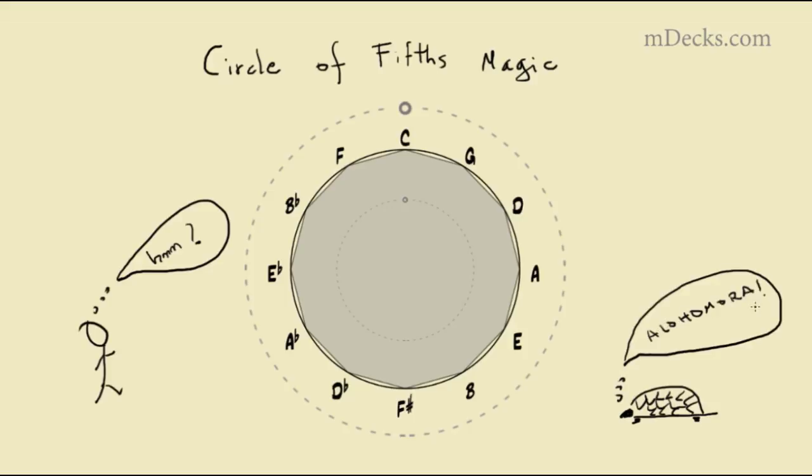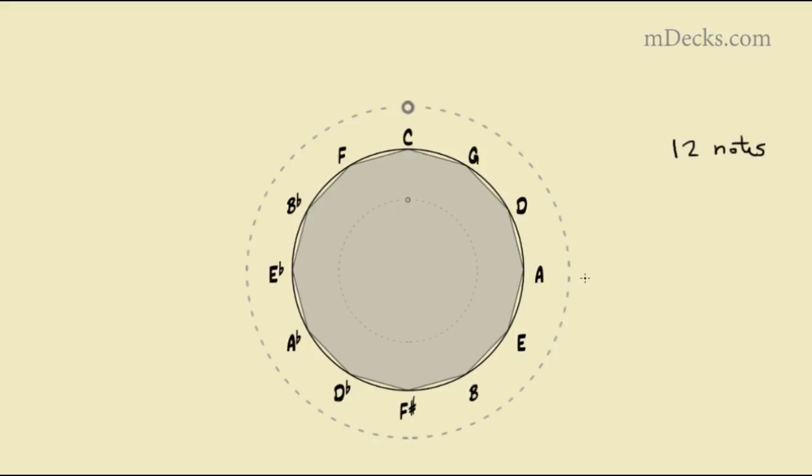What is the circle of fifths? The circle of fifths is a simple yet powerful device to organize the 12 notes in our tonal music system.